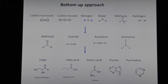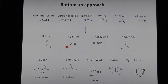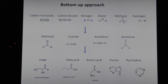The bottom-up approach is to take chemicals in the atmosphere — carbon dioxide, nitrogen, water, maybe methane, hydrogen, maybe carbon monoxide — and try to build complex chemicals out of them. Some of the things formed are acetylene, cyanide, aldehyde, ammonia. These would come out of your car exhaust in small but measurable amounts. These can make the next layer of complexity: pyrimidines, purines, amino acids, fatty acids, and sugars — that's what we're made out of. Cyanide would go right into these things; they're like polymers of cyanide.